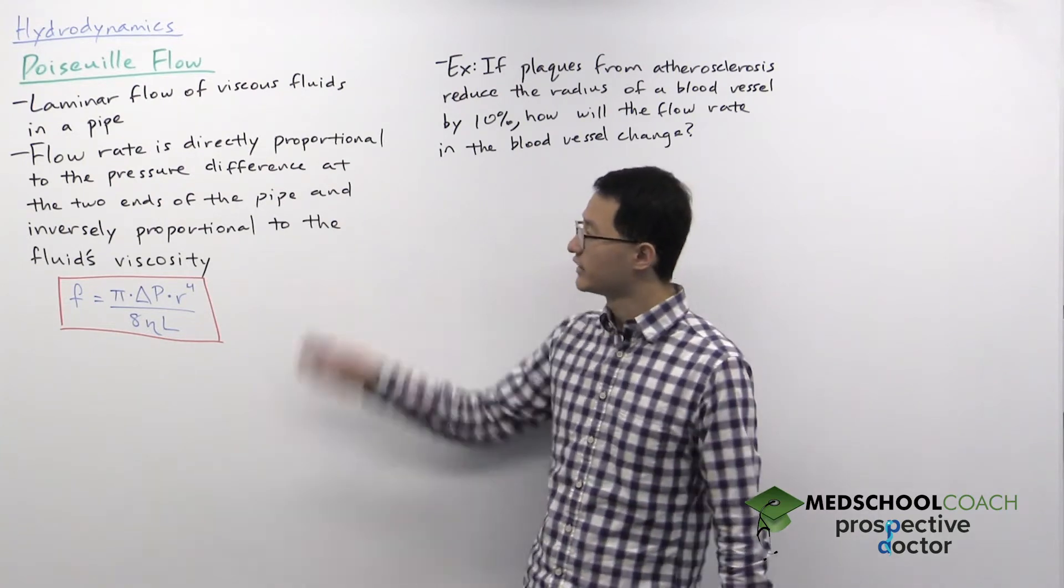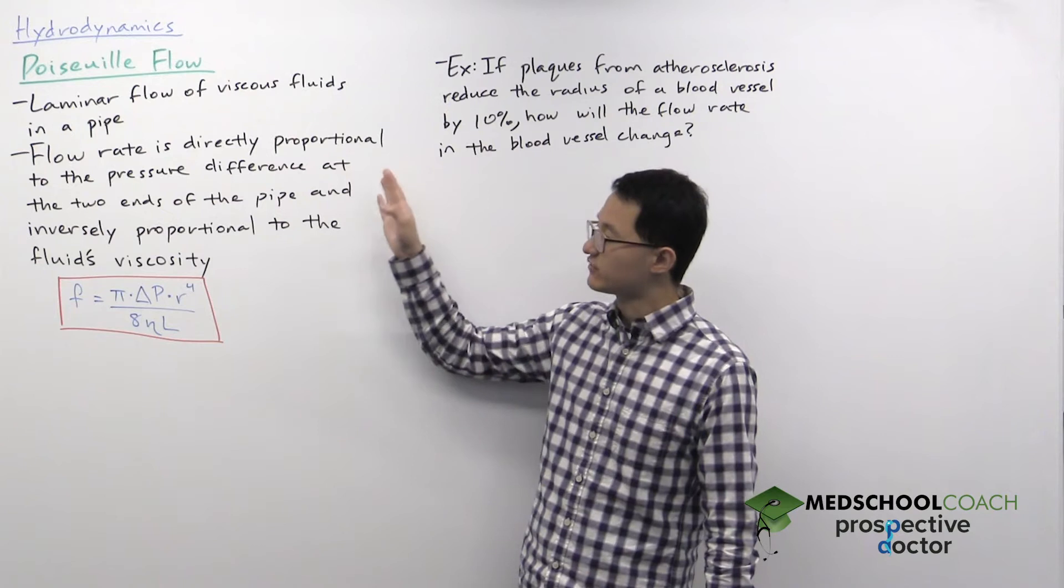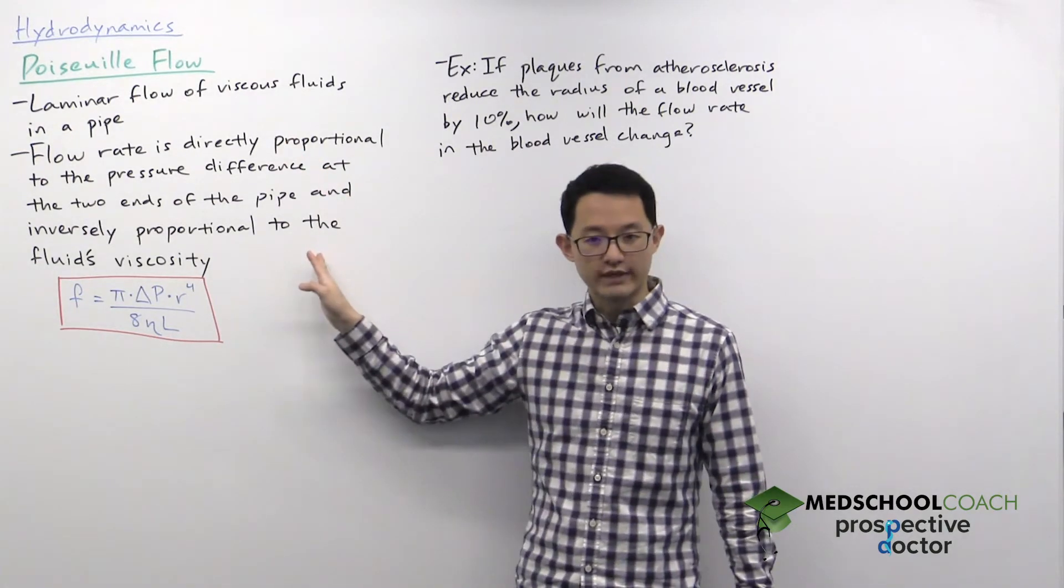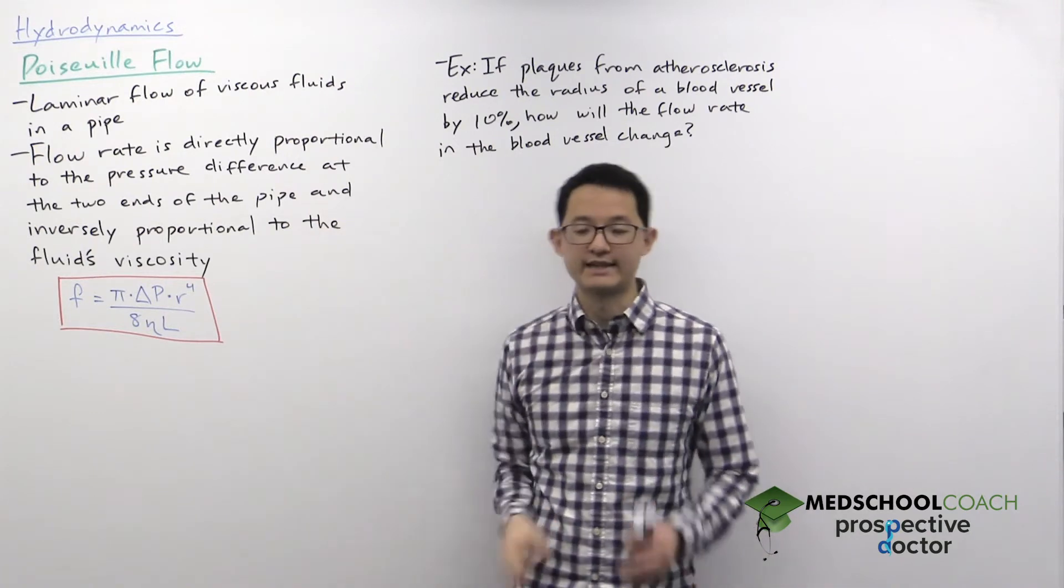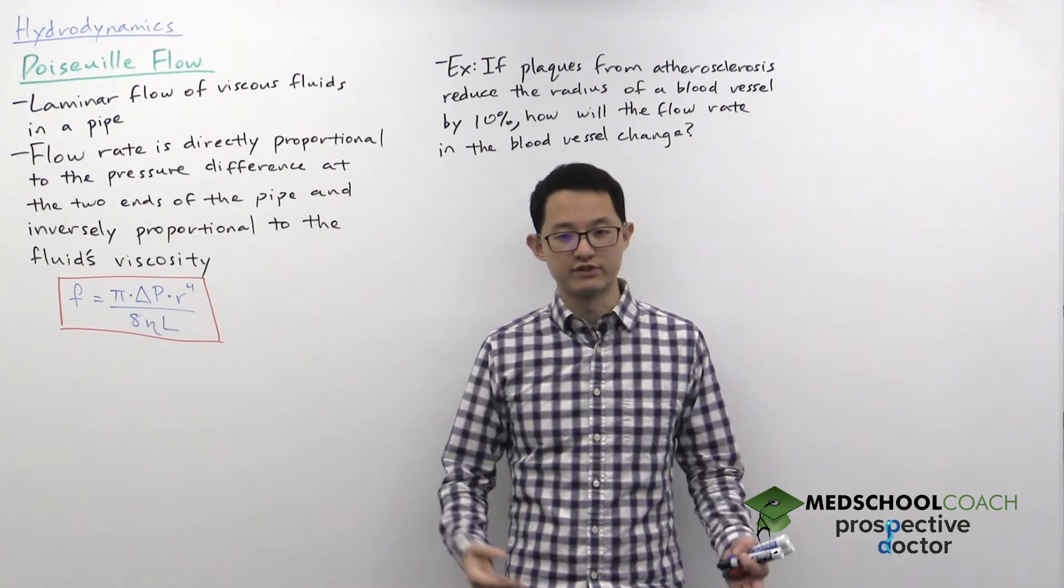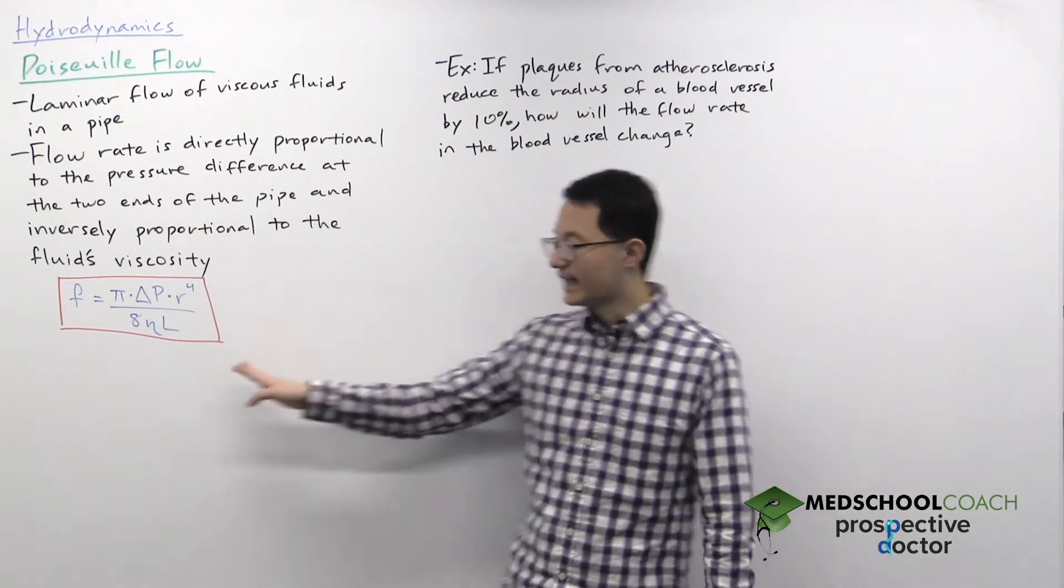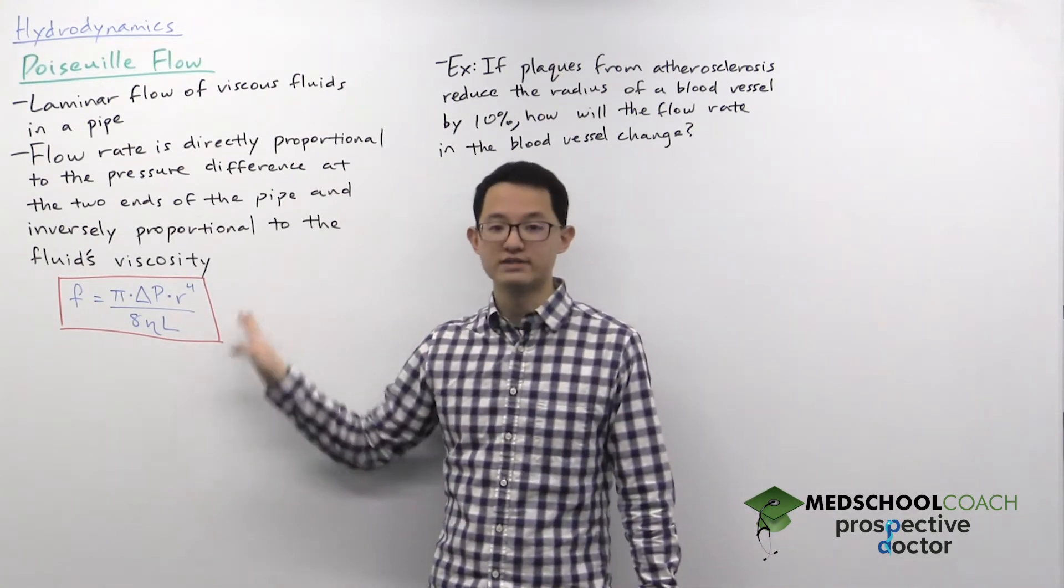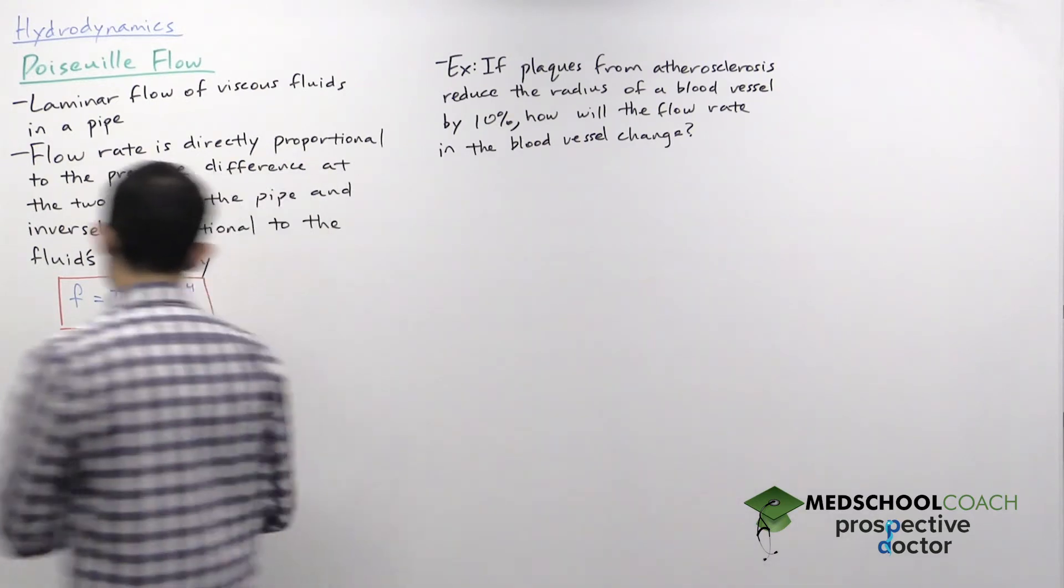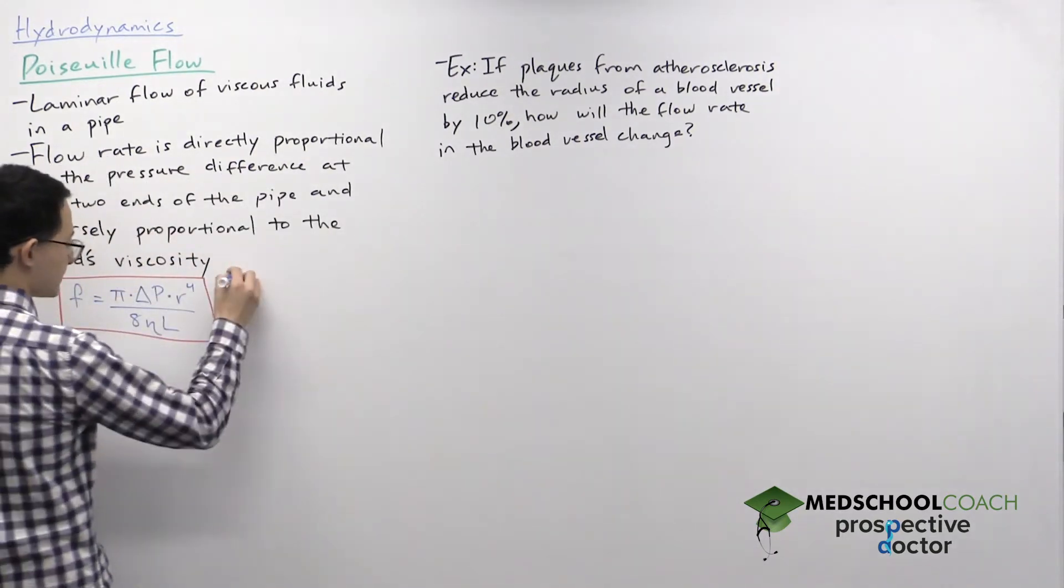As it turns out, when you're looking at viscous fluid flow that's laminar and within a pipe, the flow rate is directly proportional to the pressure difference at the two ends of the pipe and inversely proportional to the fluid's viscosity. We can see that in this equation. This is Poiseuille's law that describes the flow rate. And here F, of course, is the flow rate. We've seen that before.